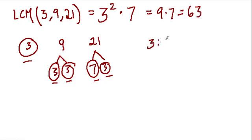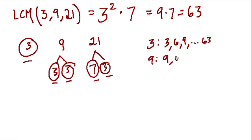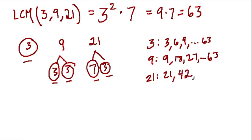We could test it by writing out the multiples of 3 — 3, 6, 9 — and eventually we would reach 63. For 9, we start with 9, then 18, 27, and eventually we get 63. And for 21: 21, then 21 times 2 which is 42, and 21 times 3 which is 63. That's the first multiple that all three numbers share.